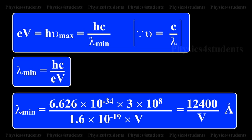For the given operating voltage, the minimum wavelength is same for all metals.